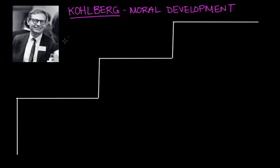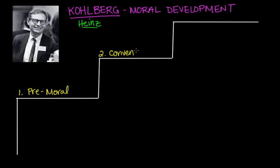This was the most famous dilemma — it's called the Heinz Dilemma. After telling this story to the children, Kohlberg asked them a series of questions, like: Should Heinz have stolen the drug? Would it change anything if Heinz did not love his wife? What if the person dying was a stranger — would it make a difference? And should the police arrest the chemist for murder if the woman died? After compiling and analyzing all of the responses, Kohlberg identified three distinct levels of moral reasoning.